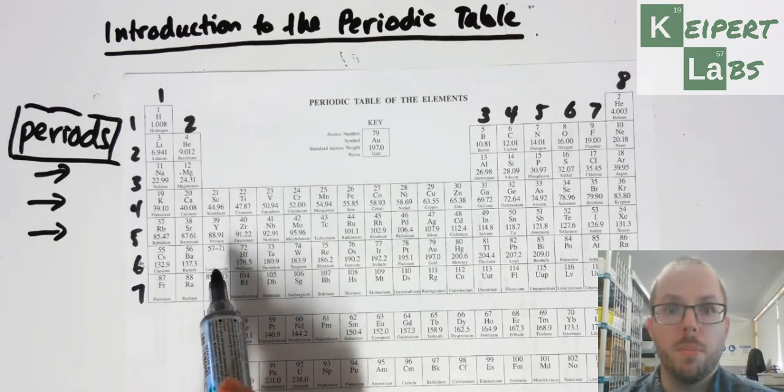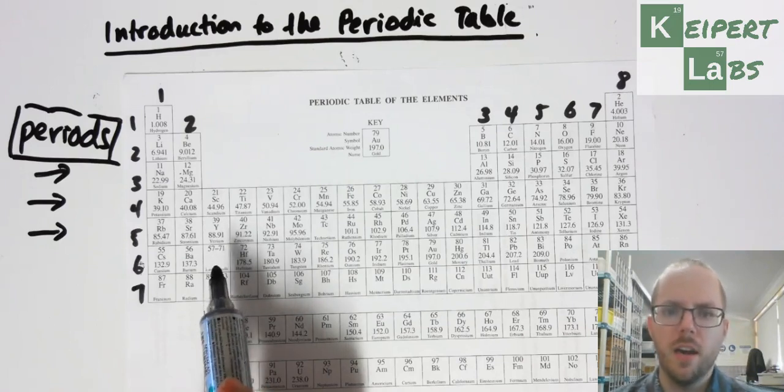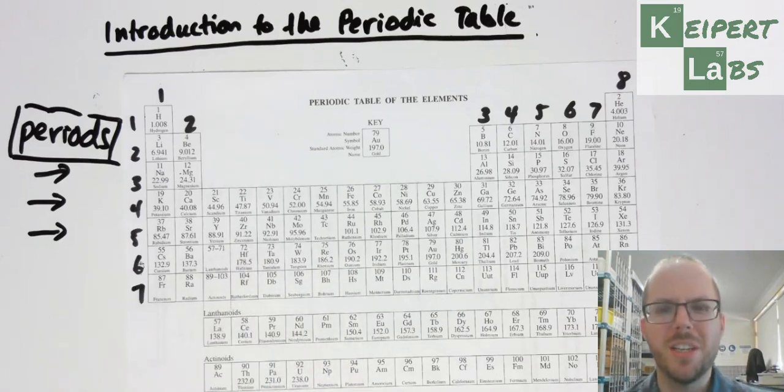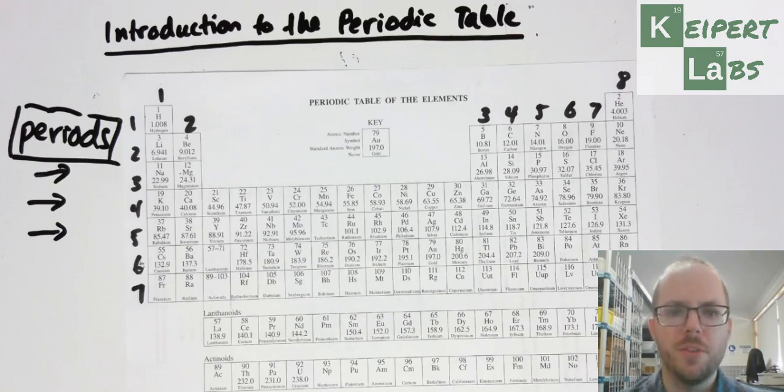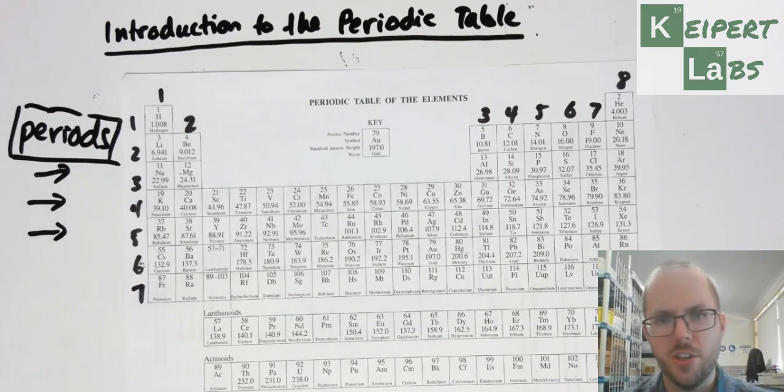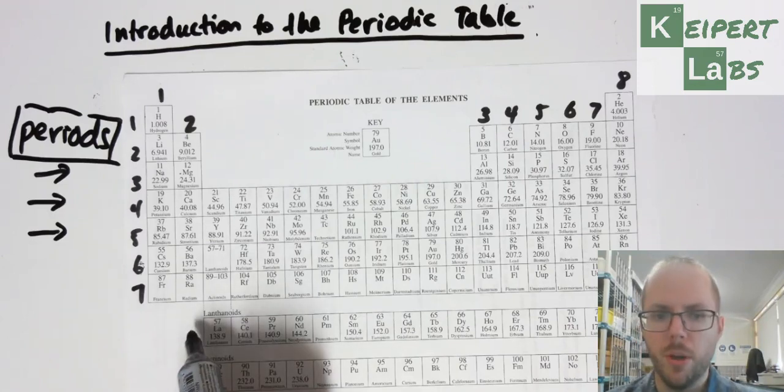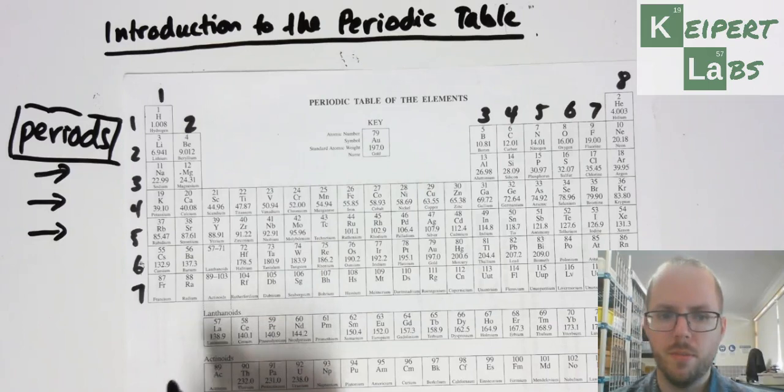What we can see is that these two rows down the bottom actually should slot in here. But the problem is that it makes the document much longer, and so to fit it on an A4 page you have to write really small. Or as we do here, we actually take that section out, slot it in underneath for convenience. But chemically speaking, it belongs in there. So they're actually rows belonging to periods six and seven.